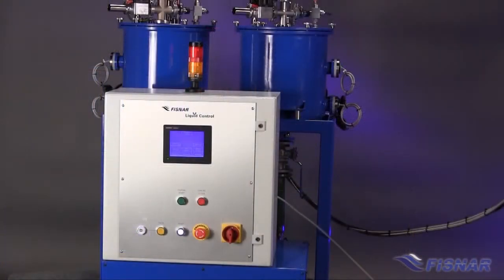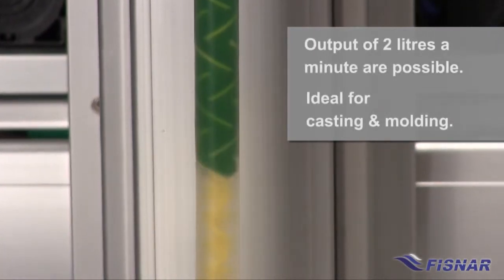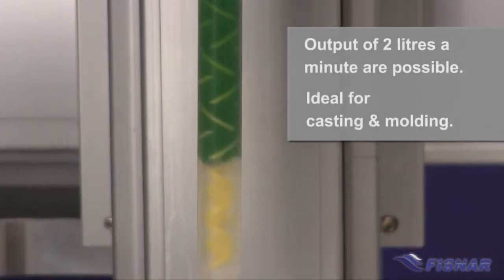The system is a continuous flow metering and mixing machine for casting, filling, form-in-place gaskets and seals. Metered outputs of up to 2 liters per minute are possible, ideal for casting and molding.